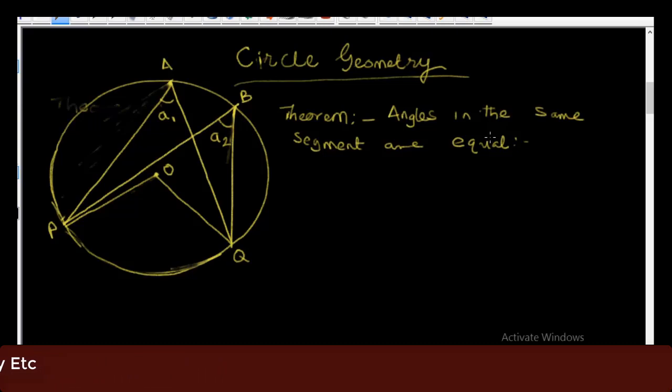Given A and B are points on the same arc of circle A, B, P, Q. As we can see, A and B are points on the same arc of a circle A, B, P, Q.